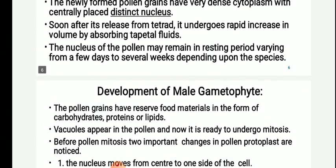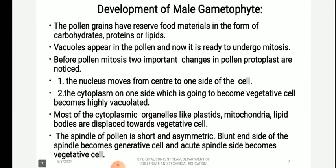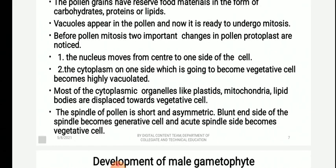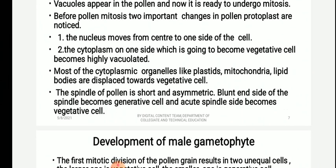The nucleus is very distinct and the pollen grain may remain in a dormant state in some woody species. But in the majority of cases, once it is released from the tetrad, it enters mitotic division as soon as possible. The pollen grains have reserved food materials in the form of carbohydrates, proteins, or lipids. A vacuole appears in the pollen grain and it is now ready to undergo mitosis. Before pollen mitosis, two things happen in the pollen protoplast: the nucleus moves from the center to the side of the cell, and the cytoplasm on one side, which is going to become the vegetative cell, becomes vacuolated.